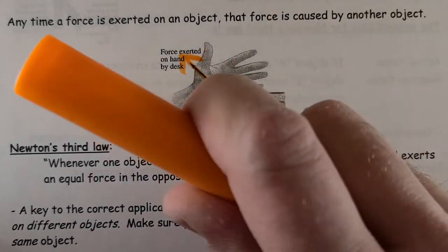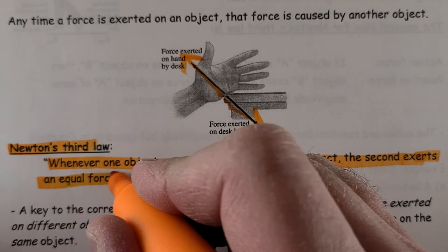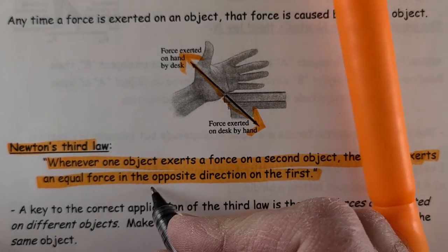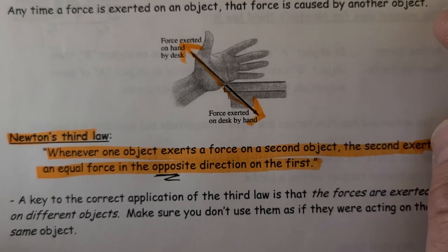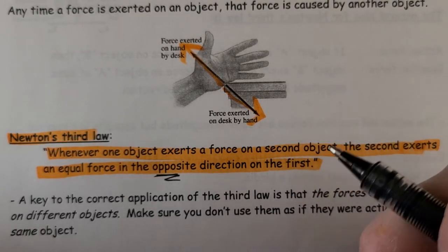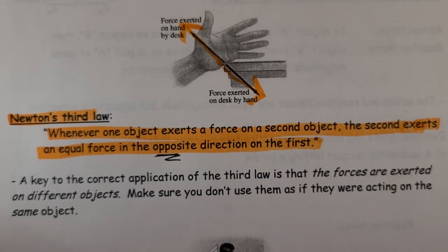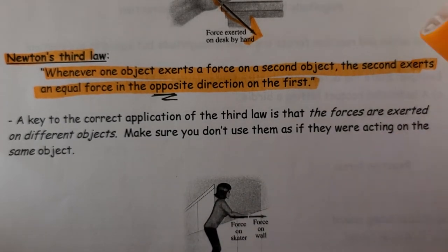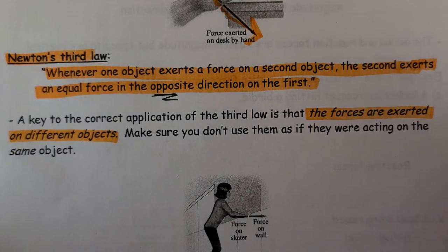So Newton's third law is, whenever one object exerts a force on a second object, the second object exerts an equal force, but in the opposite direction of the first force. So you may recall this as being the action-reaction force. On TV shows or movies, they often say for every action, there's an equal and opposite reaction. But what that really means is that if you exert a force on one object, that object exerts an equal and opposite force on you. A key to correct application of the third law is that the forces are exerted on different objects. So make sure you don't use them as if they're acting on the same object.